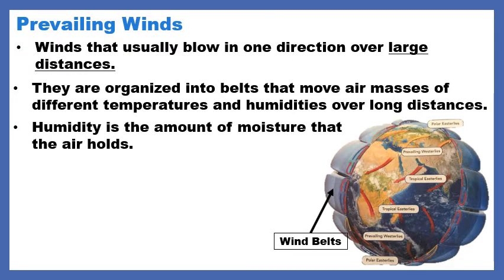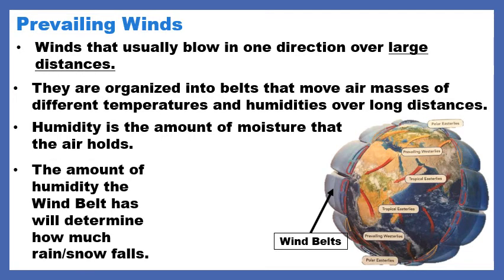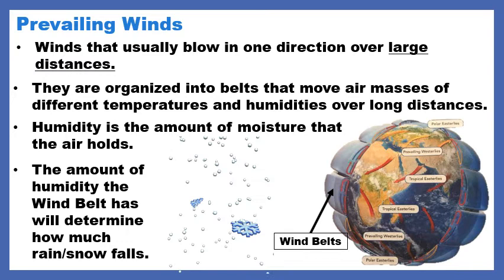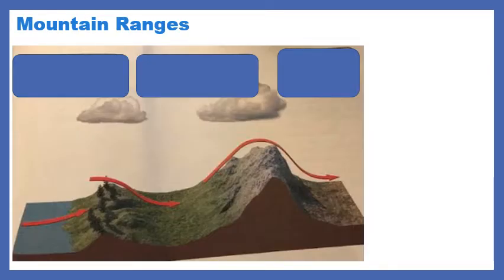They are organized into belts that move air masses of different temperatures and humidities over long distances. Humidity is the amount of moisture that the air can hold. On a warm summer day when you feel really sticky and sweaty, that's because the humidity is high — there's a lot of moisture in the air, almost like wearing a hot blanket. The amount of humidity a wind belt has will determine how much rain or snow will fall.